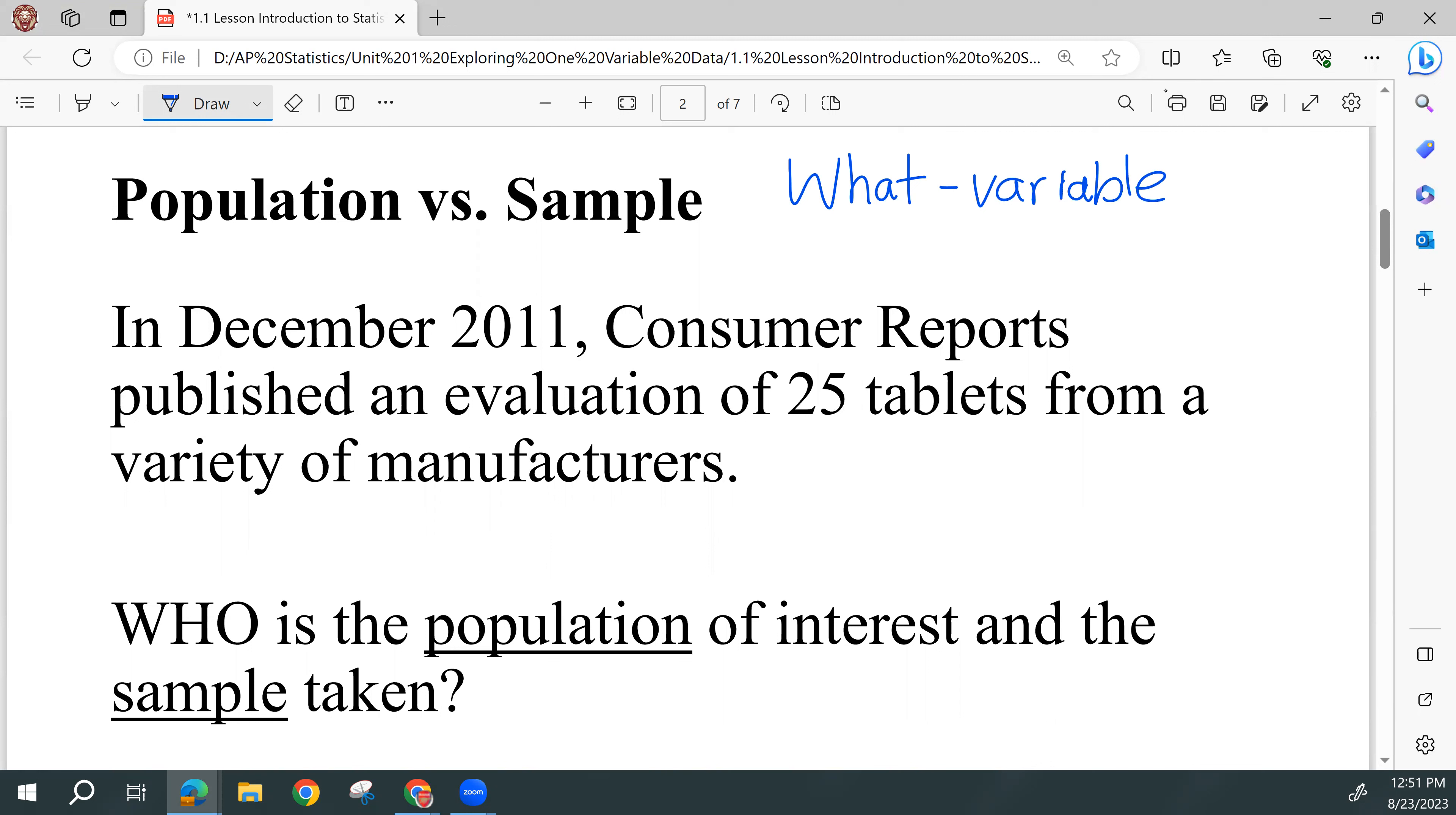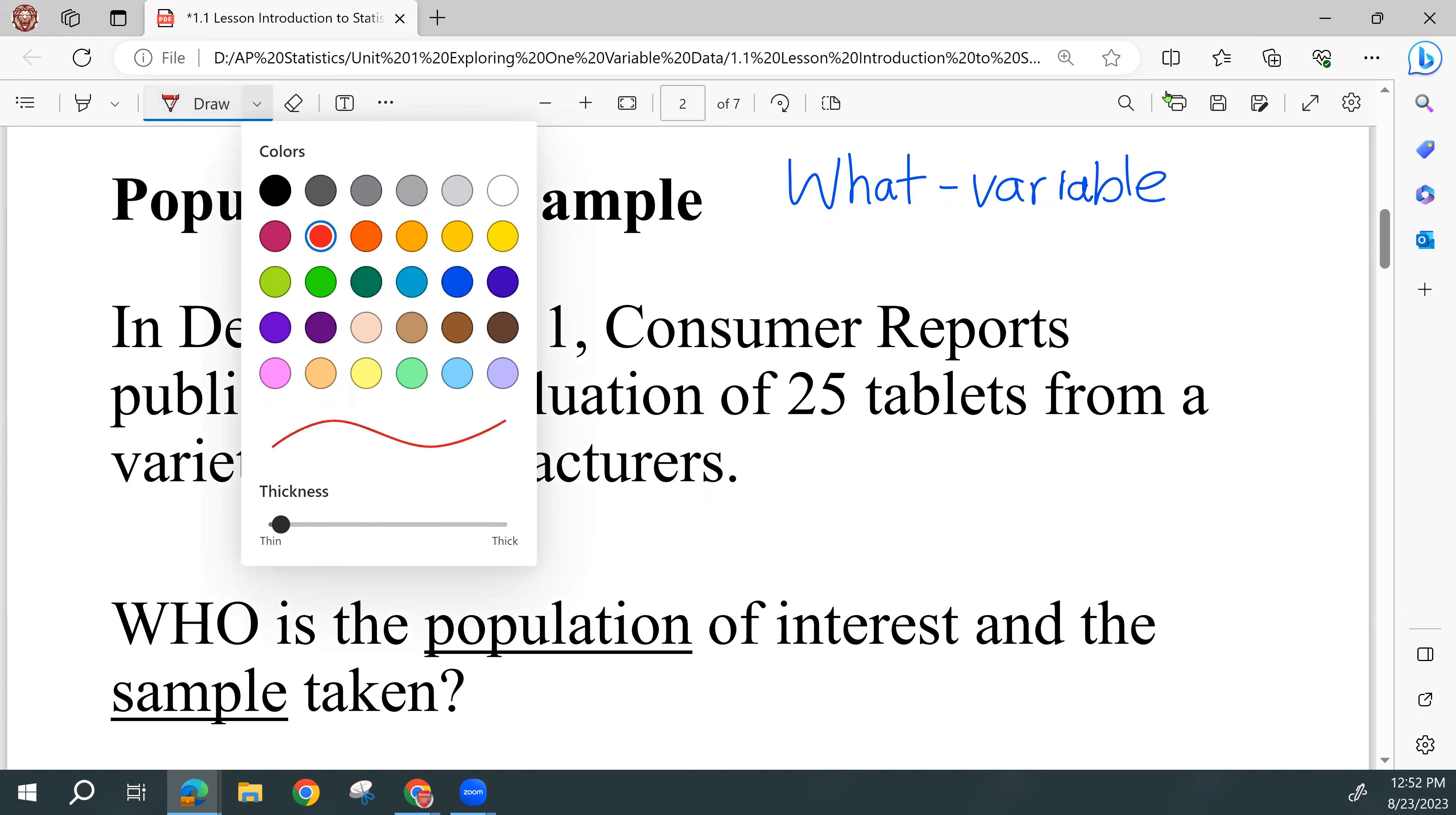So we're always trying to collect information, try to figure something out. Maybe we're trying to figure out something about the height of high school students, or maybe the average income of an individual in Prince William County. And so that is our what. The who is also very important. We always want to know what it is we're trying to find out about, but we also want to know who we are trying to find that thing out about.